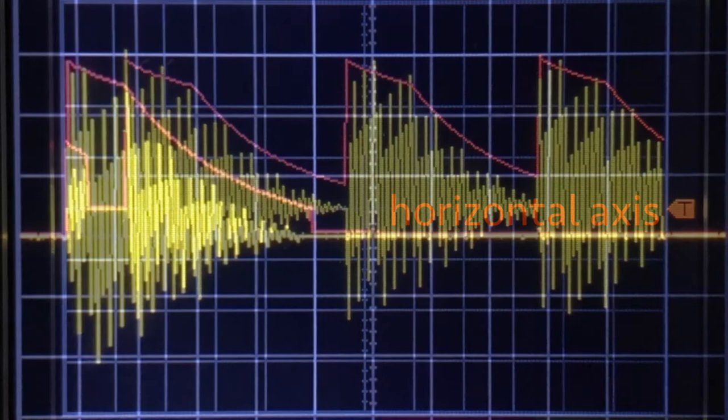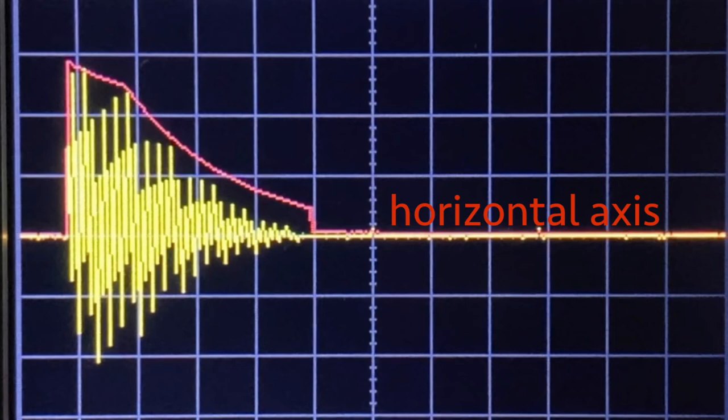We can also notice that the envelope graph stays above the horizontal axis, but the audio wave graph goes above and below the horizontal axis, again showing us the two-quadrant multiplier.